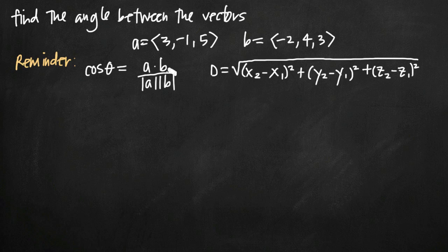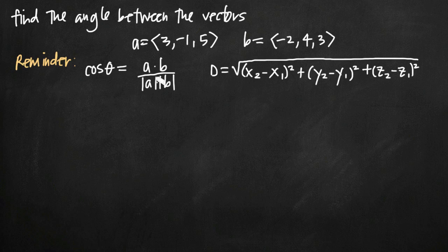The formula we're going to be using to find the angle between the vectors is a corollary formula that's very common when working with vectors. It tells us that the angle between the vectors can be found using cosine of theta — theta being the angle between the vectors — equals the dot product of a and b divided by the length of a times the length of b. This notation that looks like absolute value of a is literally the length of a.